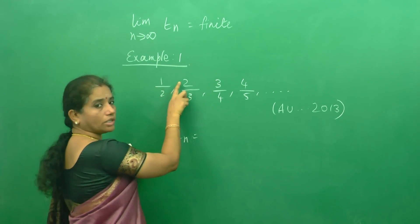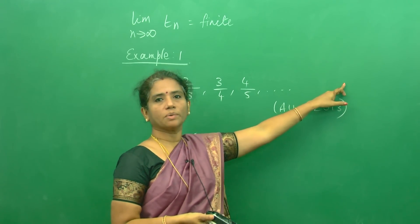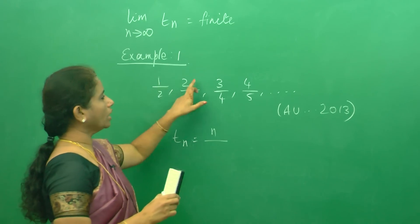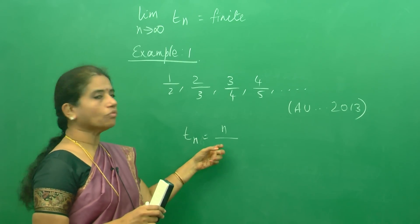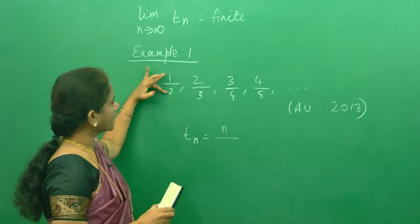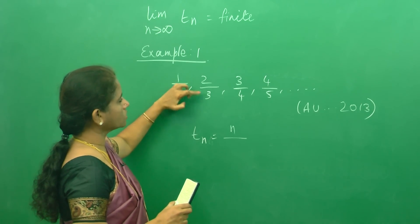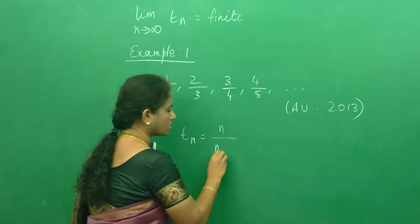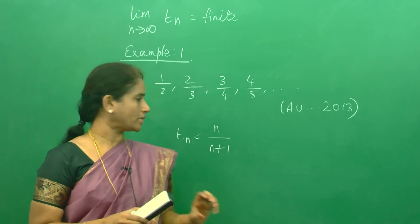Just look at the numerator — it goes 1, 2, 3, 4, etc. What will be in the nth term place? n will be there. So the nth term numerator is going to be n. Now, looking closely at the sequence, the denominator is just 1 more than the numerator: 2 is 1 more than 1, 3 is 1 more than 2, and so on. So the denominator is going to be n+1. So the nth term Tn = n/(n+1).